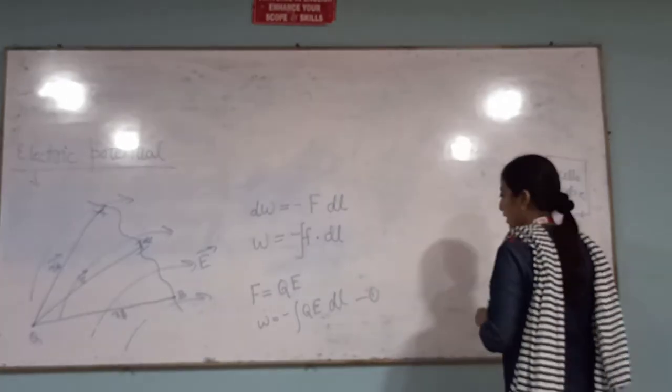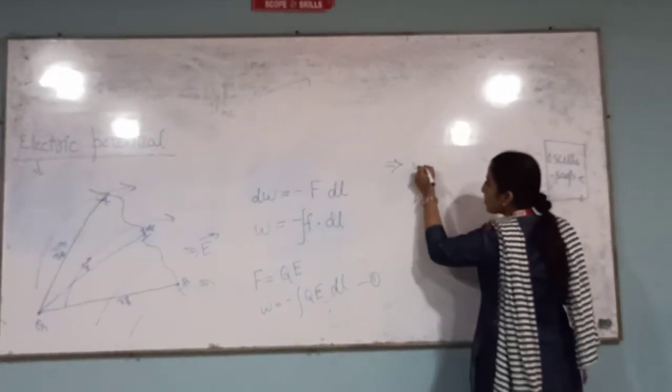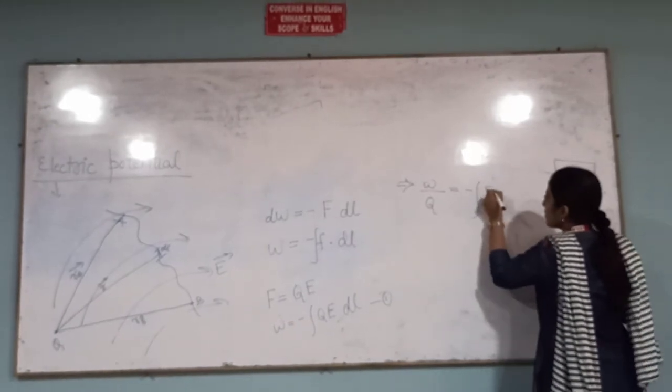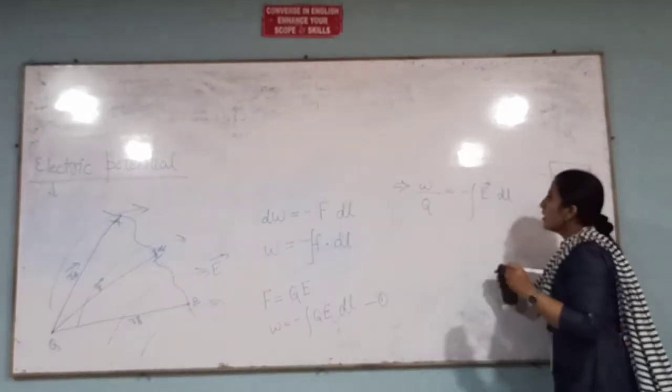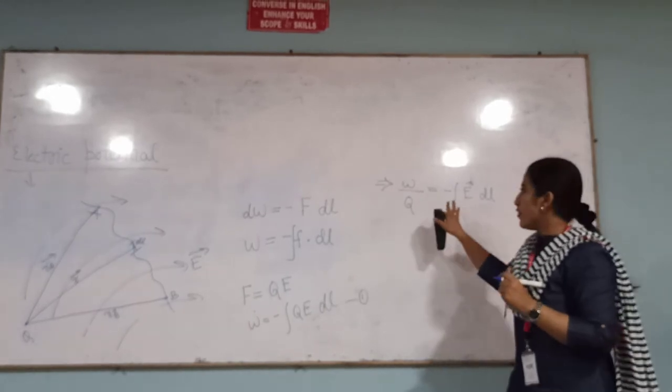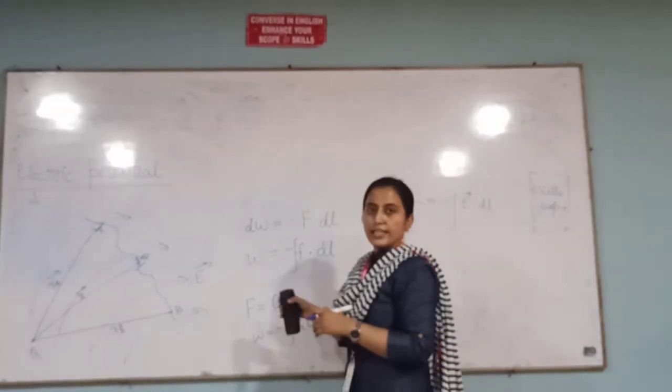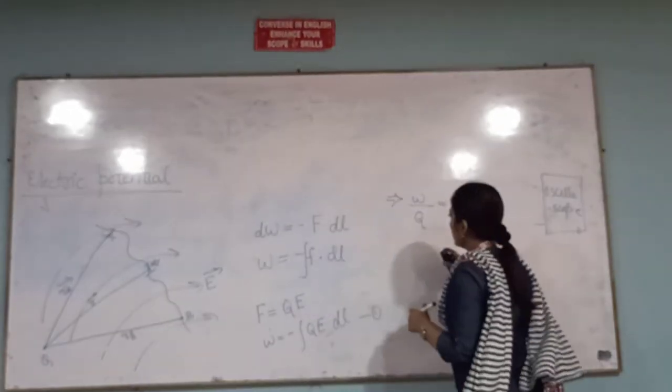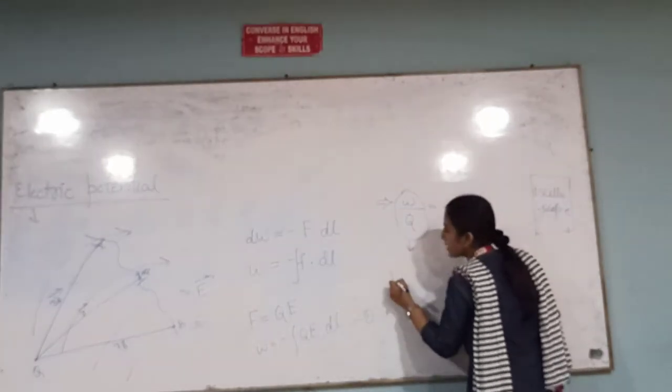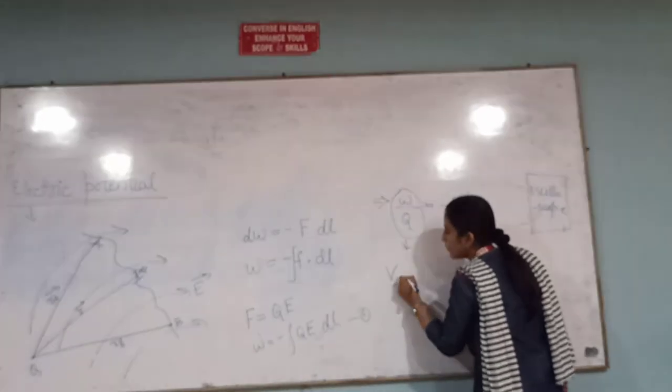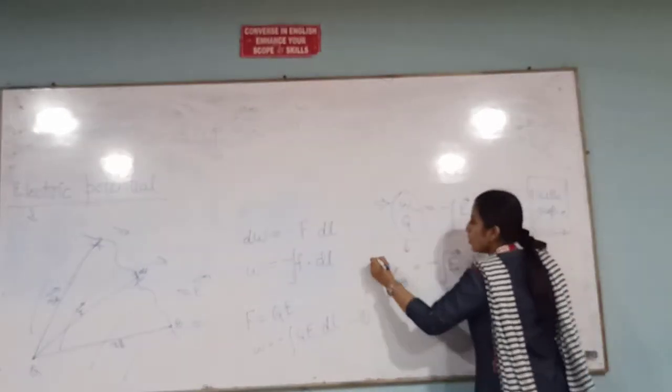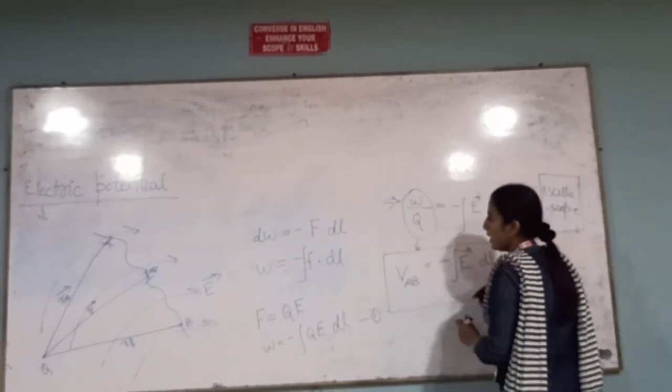What is this also? This negative charge is explaining that the work we are doing is because of the external agent. So we will, and what is this work done per unit charge? This we call electric potential and we denote it as V of AB equals to minus integral A to B E dot dl. So this is the mathematical formula for electric potential.